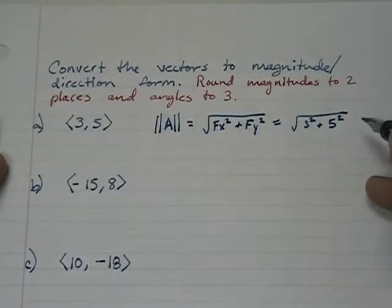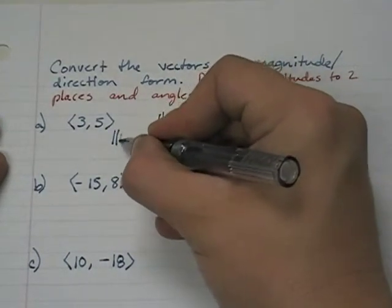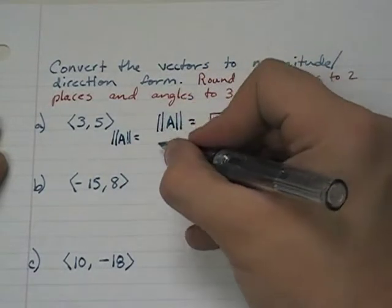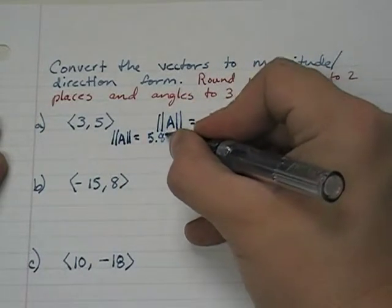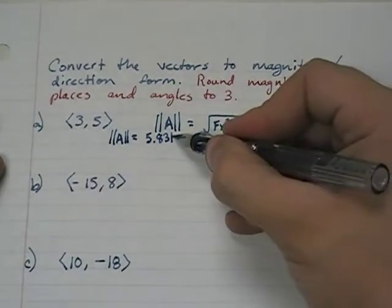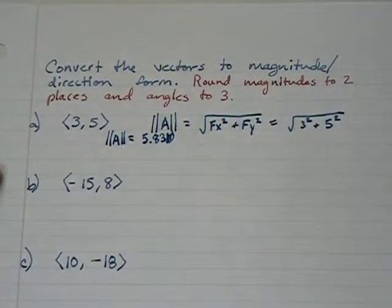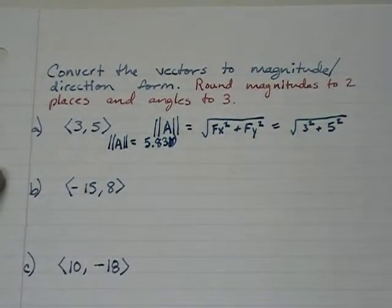So it's three squared plus five squared and then take the square root. Three squared is nine and five squared is twenty-five. Add those together and take the square root. The magnitude of vector a is 5.831. They told us to give the magnitude to two places, so the magnitude of vector a is 5.83.